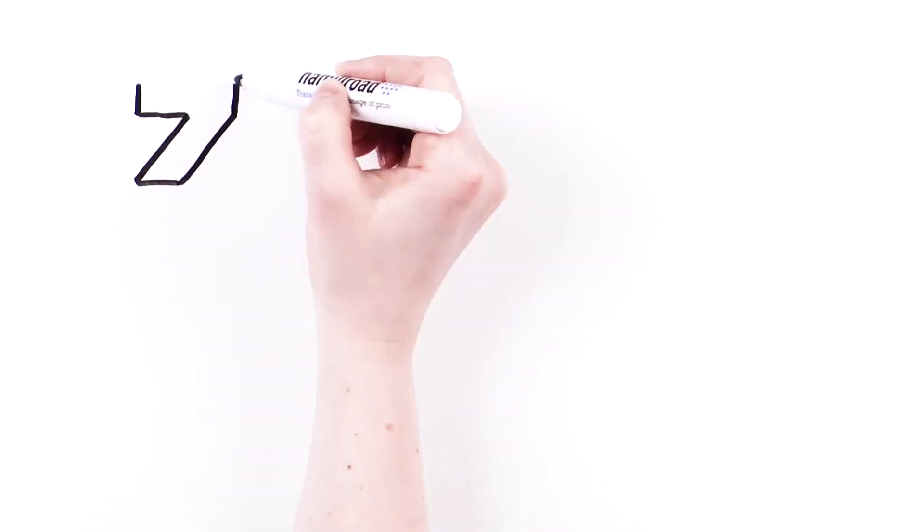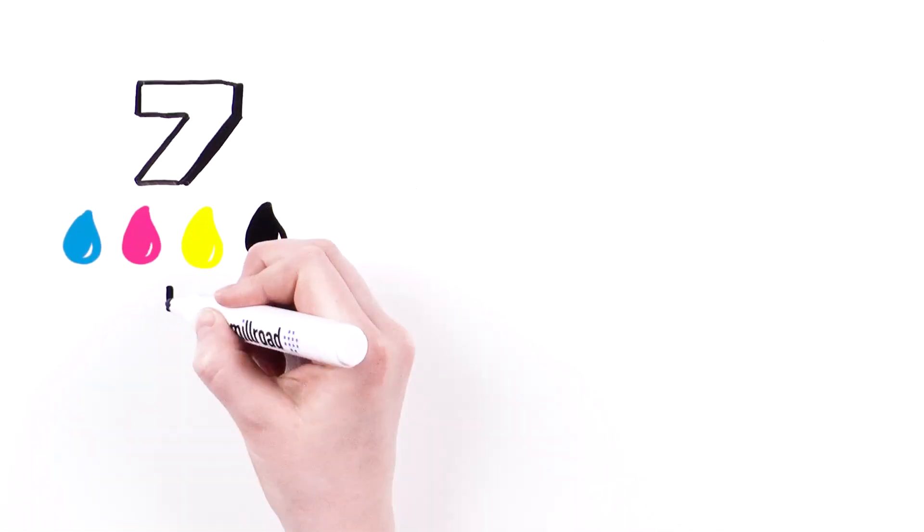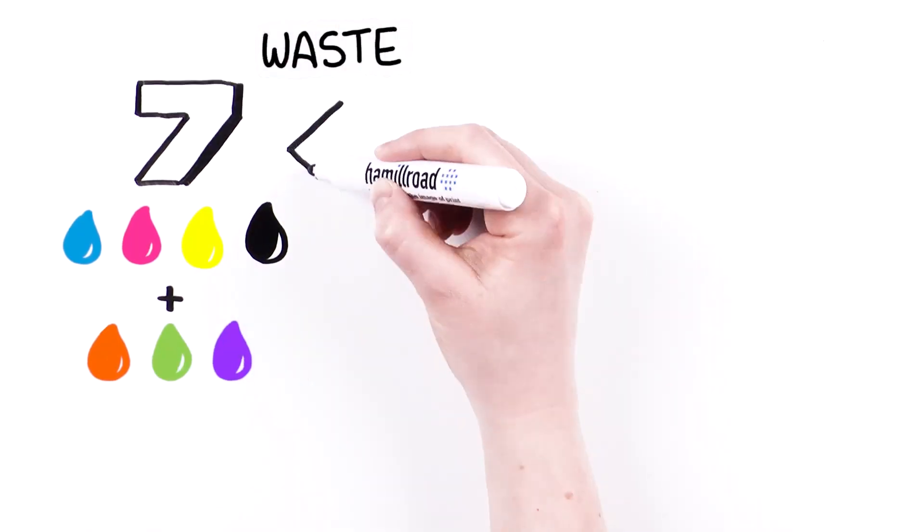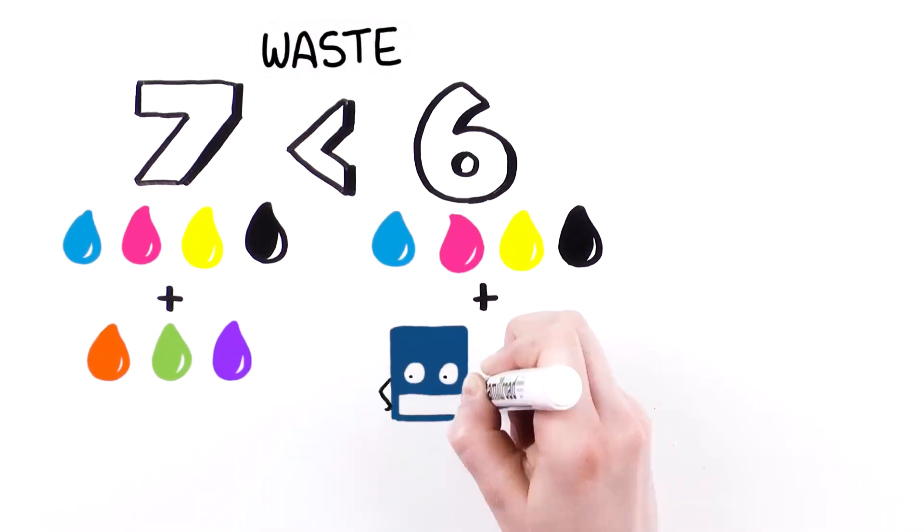So how does this make ECG more sustainable? Using up to seven colours, CMYK plus OGV, wastes less than using six colours like CMYK plus two spots.